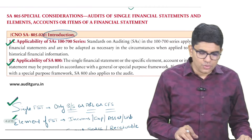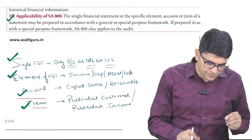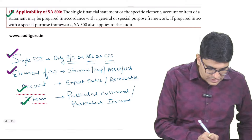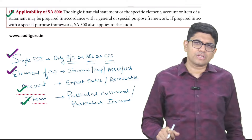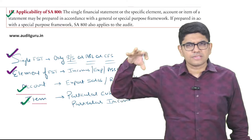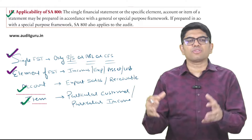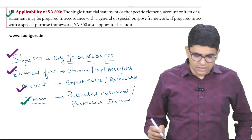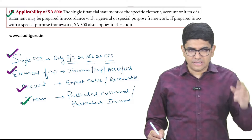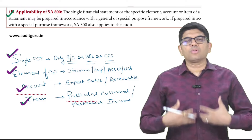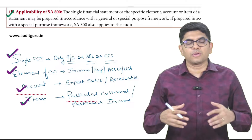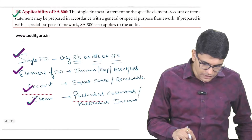Now we go to SA 805. SA 805 is about audit of a single financial statement — that is, balance sheet, P&L, or cash flow statement — or audit of an element of financial statement, which means a big part of the financial statements such as an asset, liability, income, expense, or part like fixed assets, current assets. An account can be a particular sales account or debtors account, and an item can be a specific income, expense, asset, or liability. Nowadays there are such assignments to do only audit of a single financial statement, element of financial statement, audit of an account, or audit of an item. In this case, SA 805 will get applicable.